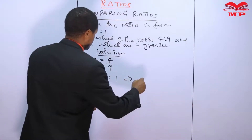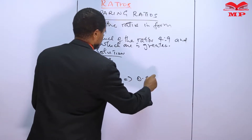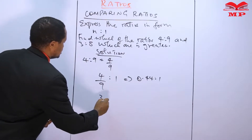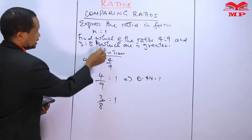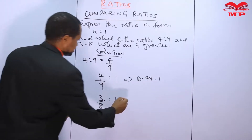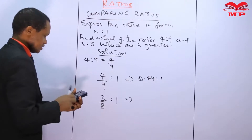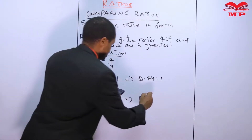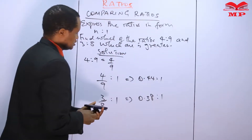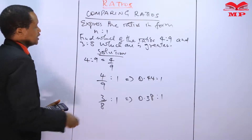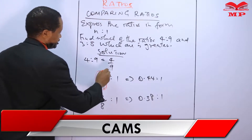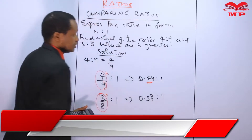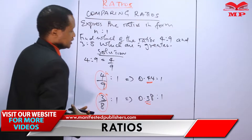Four over nine equals zero point four four, so the first ratio is zero point four four to one. The other ratio is three over eight to one. Converting three divided by eight to a decimal and rounding to two decimal places gives zero point three eight to one. You can see that zero point four four is greater than zero point three eight.